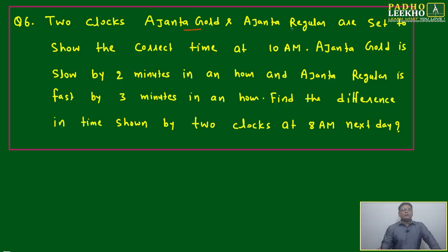Two clocks, Ajanta Gold and Ajanta Regular, are set to show the correct time at 10 AM after resetting. Ajanta Gold is slow by 2 minutes in an hour, and Ajanta Regular is fast by 3 minutes in an hour.